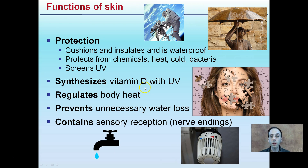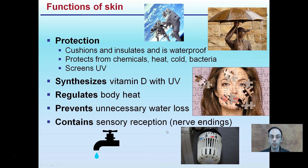The skin also synthesizes vitamin D with UV light — it puts together vitamin D using sunlight to help assemble that necessary vitamin. It regulates body heat, which the adipose tissue helps with. It prevents unnecessary water loss, and contains sensory receptors or nerve endings involved in the integumentary system.